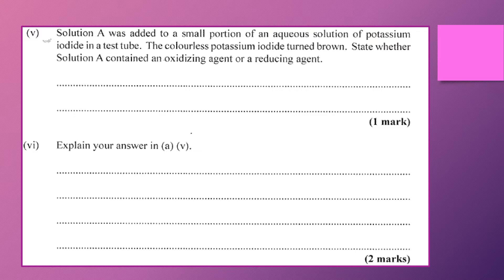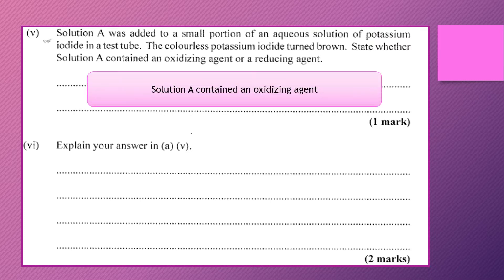So from the question we can pick out a few things. What do we know about potassium iodide? Potassium iodide we know is a known reducing agent. So the substance that it reacted with would have caused a change in its color from colorless to brown. So that solution A would have therefore been acting as an oxidizing agent.